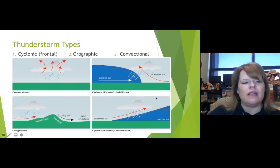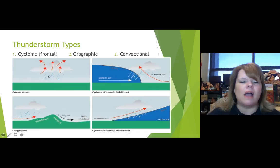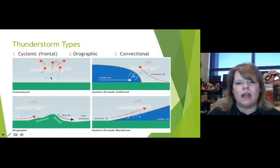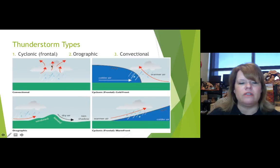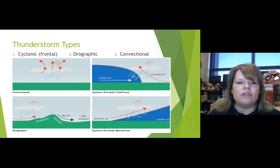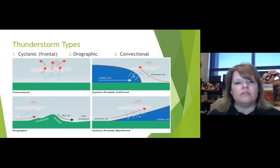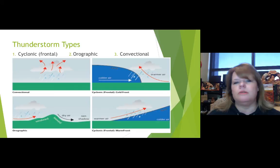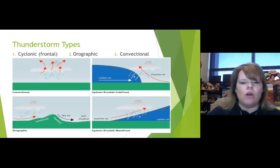Cyclonic thunderstorms are caused by a front where a cold and a warm air mass or weather pattern come together. What happens is rising and cooling temperature sends warm air upward, causing water to reach its dew point — the temperature at which water condensates. Every temperature corresponding with a barometric pressure reading has a specific dew point. If it's 70 degrees outside and the dew point is 69, when it dips to 69 degrees, you should have condensation.